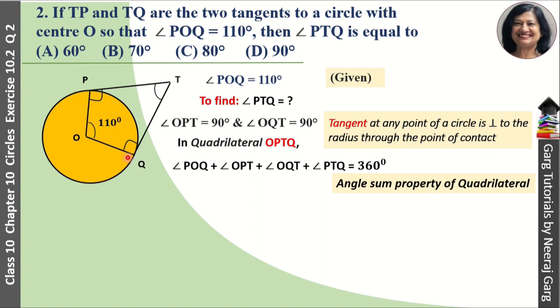So angle POQ plus angle OPT plus angle OQT plus angle PTQ is equal to 360 degrees.